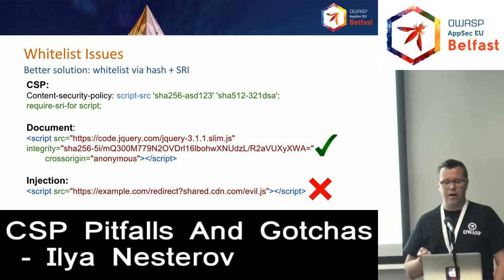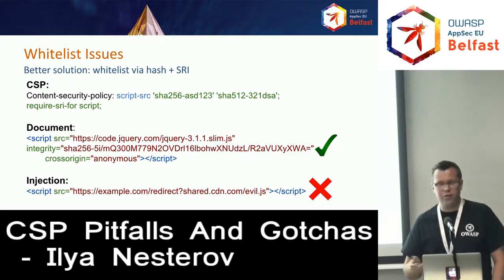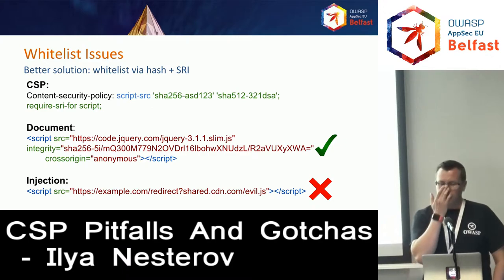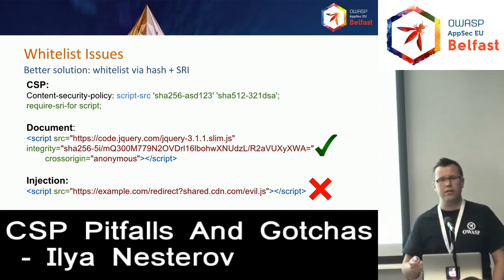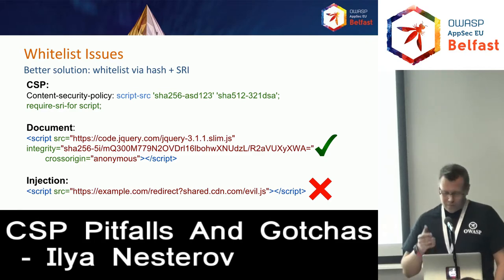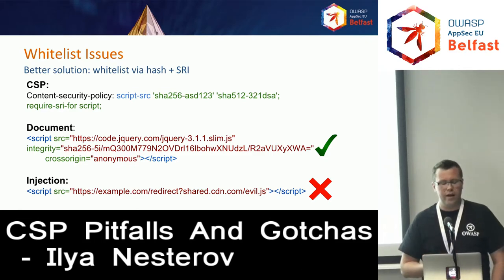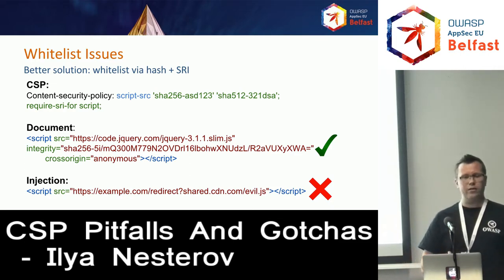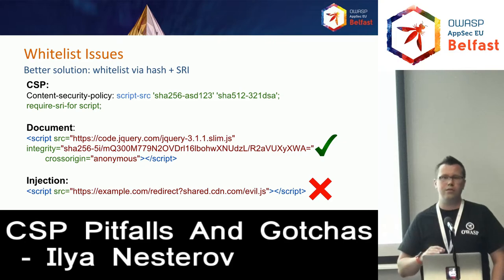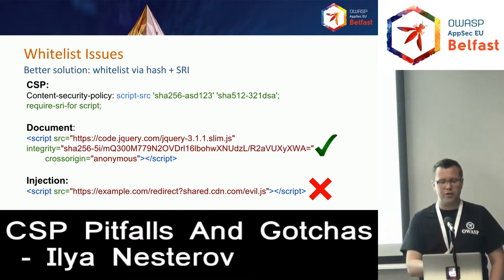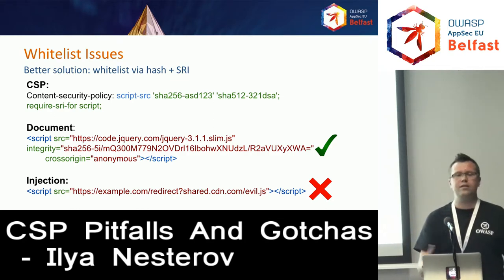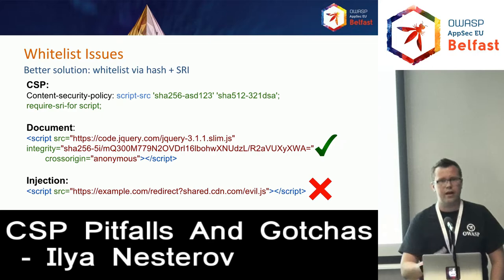Another cool feature added in CSP Level 3 is that you can now whitelist external scripts by hash or nonce — not only inline scripts. For example, you may have a document with an external script whitelisted by a subresource integrity hash, and you may use the requires-sri-for directive with values like 'script' or 'style'. Your script will load fine, but an attacker's injected script won't work because it doesn't have a proper digest in your policy.